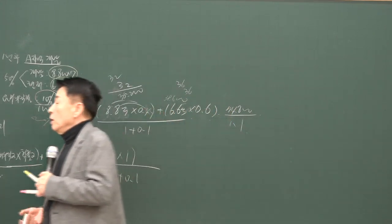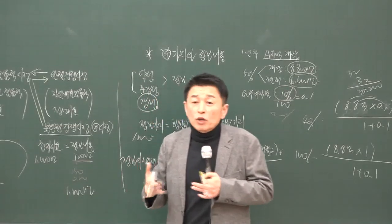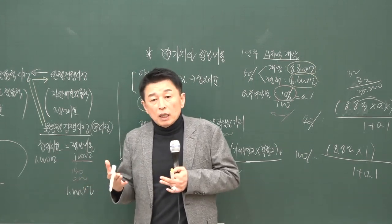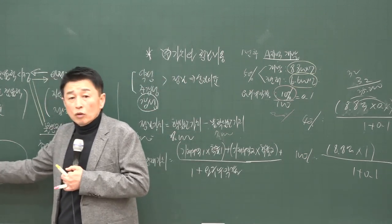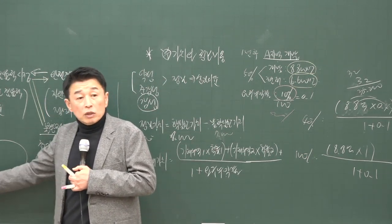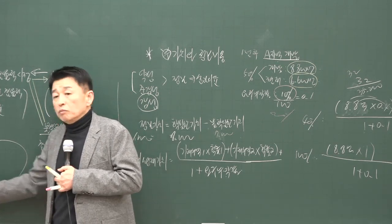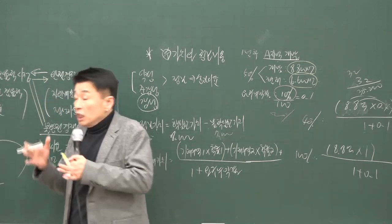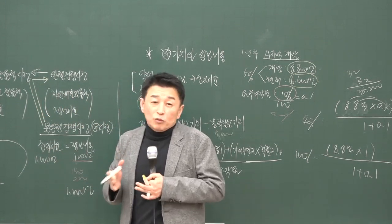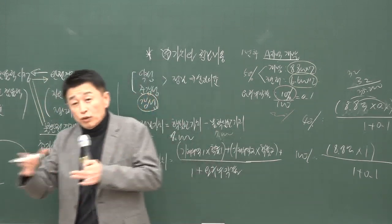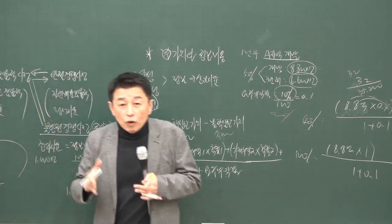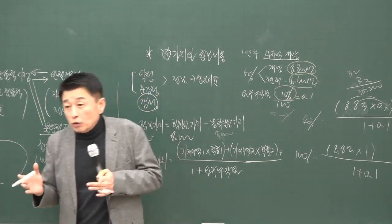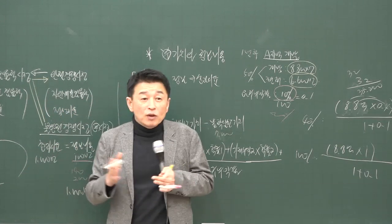시험 전략상 40문제를 40분에 풀어야 하는데 계산 문제 5개에 10분을 쓰면 나머지 35문제를 30분에 풀어야 하므로 물리적으로 불가능합니다. 이론 문제를 먼저 풀고, 계산 문제를 못 풀었다고 60점을 못 맞는 것은 아니에요. 부동산학개론은 계산 과목이 아닙니다. 기본적인 내용을 이해하고 접근해야 계산도 가능한 것이므로, 이론 이해가 우선입니다.